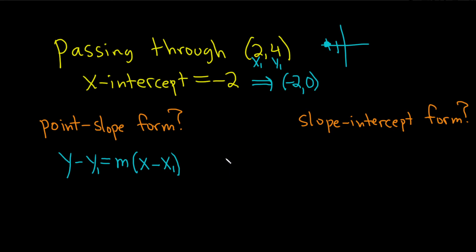So m is equal to (y₂ - y₁) over (x₂ - x₁). And then you can just call this x₂, y₂, and then just plug everything in.